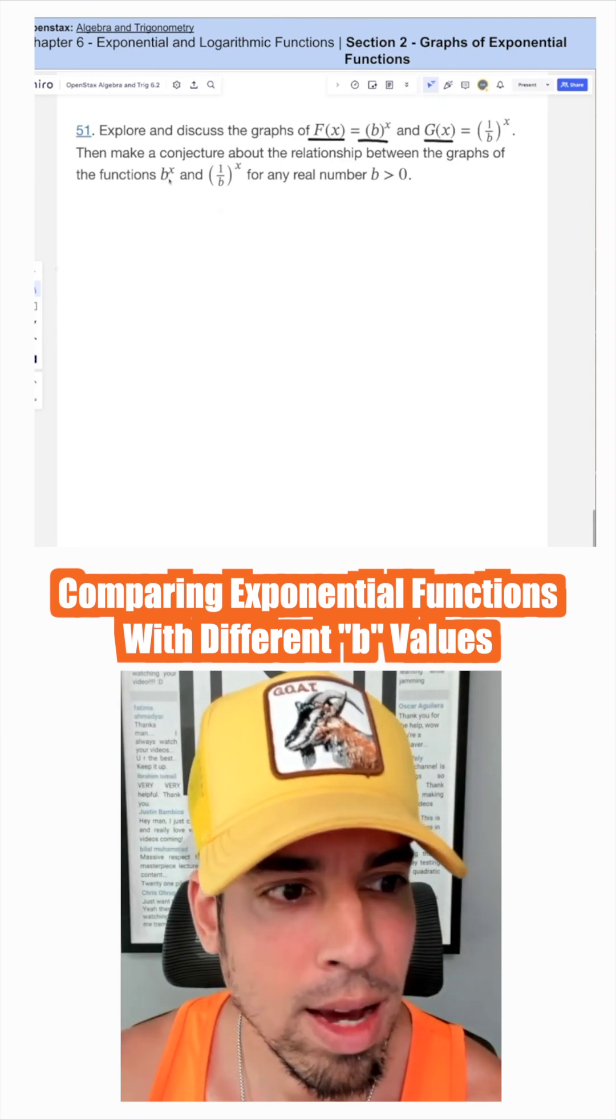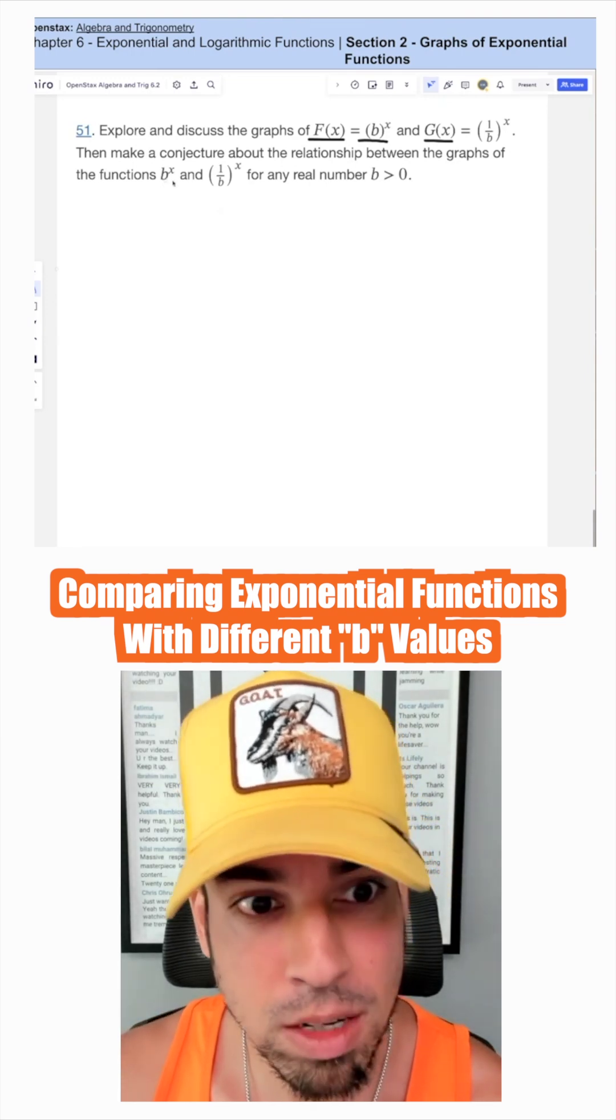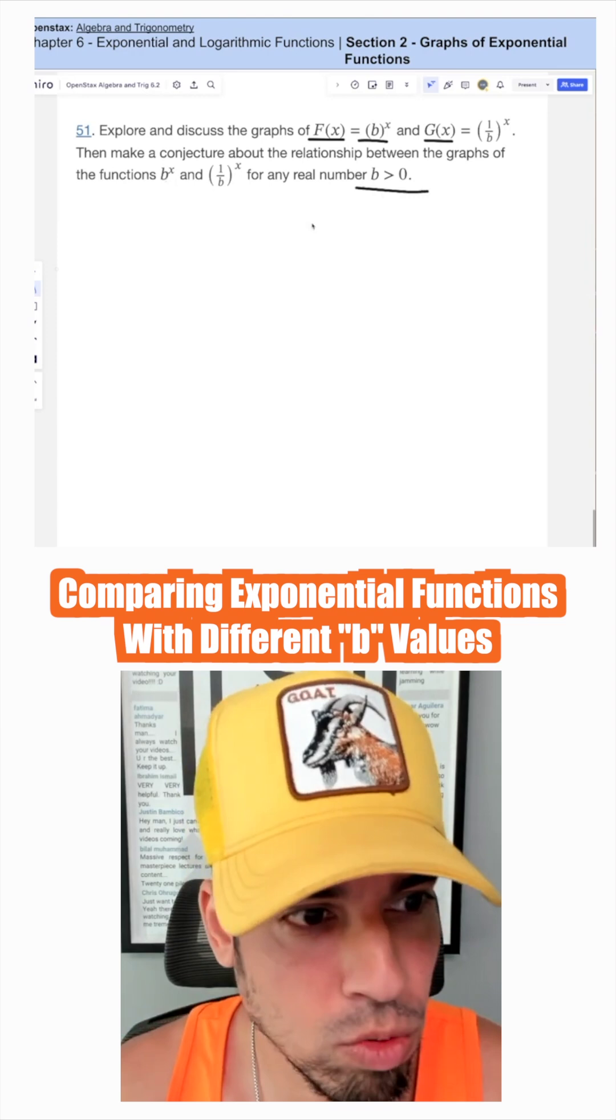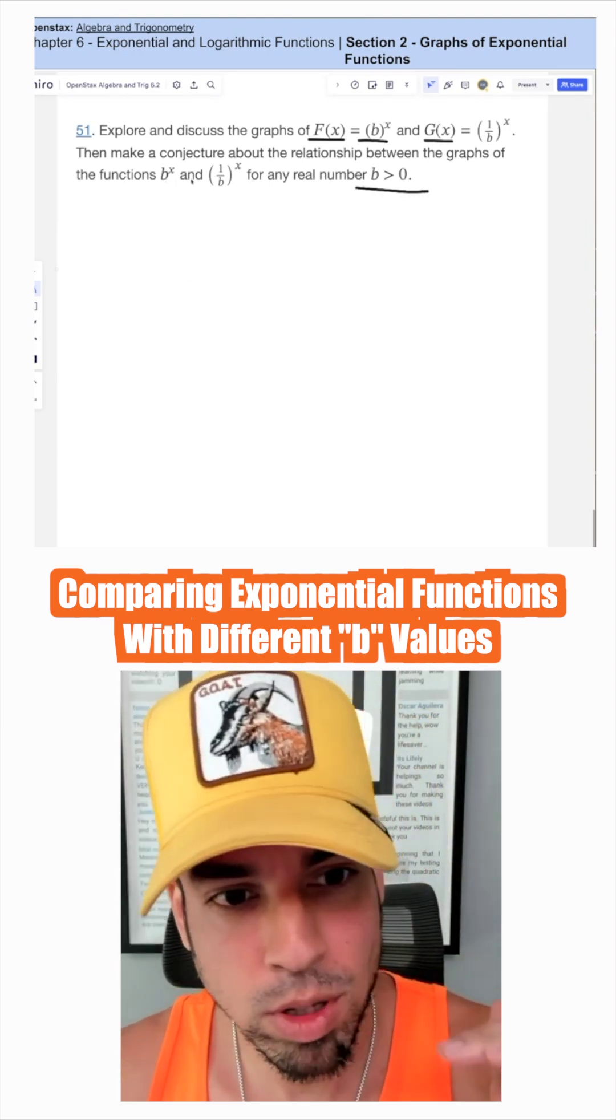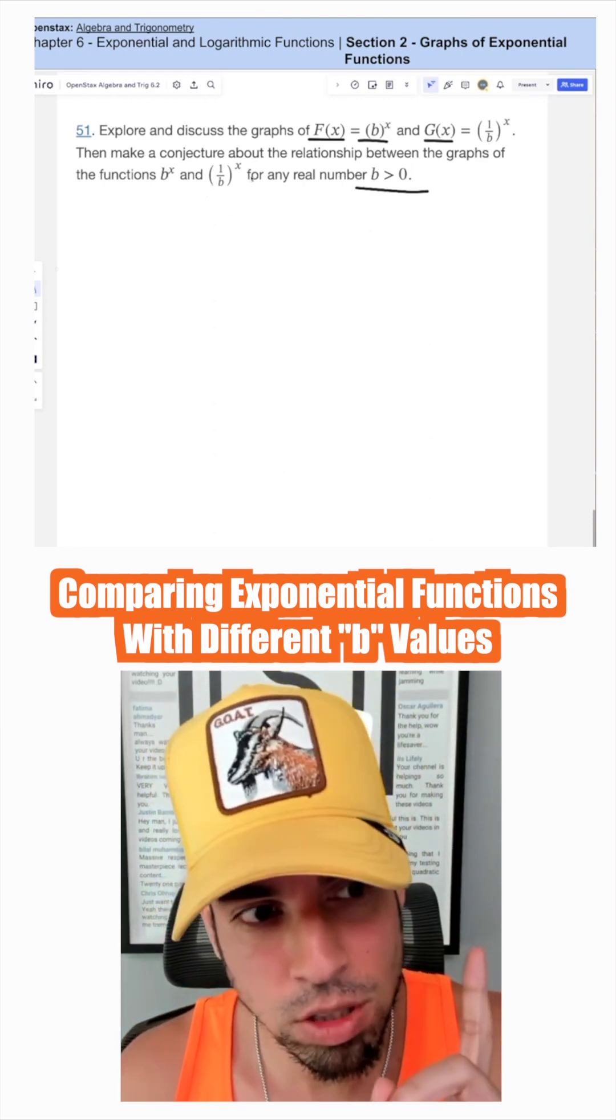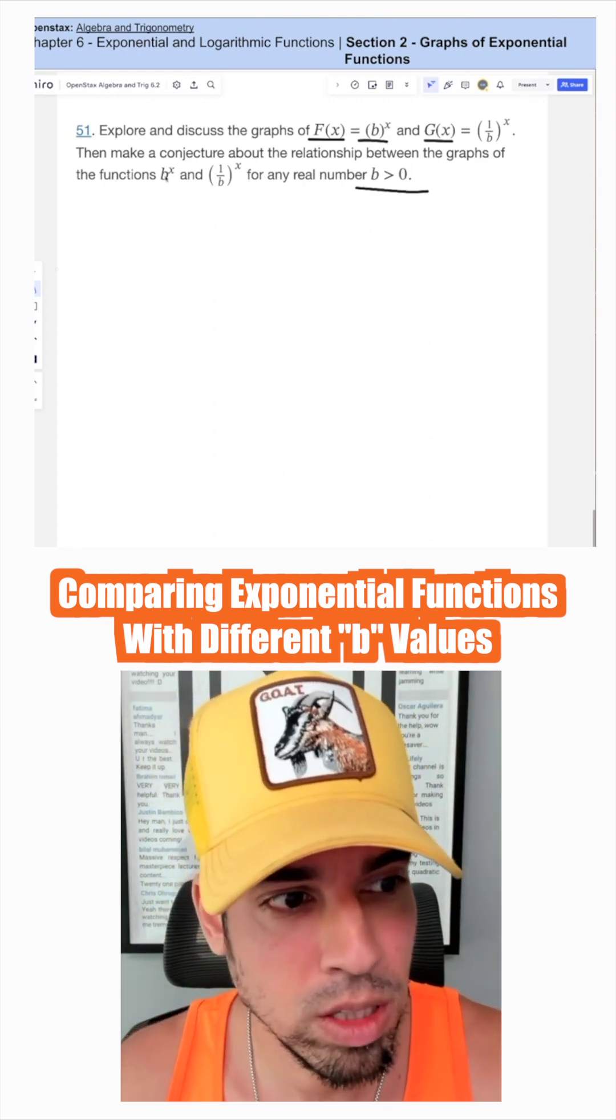So what's happening here is for b of x, we're assuming that b is greater than zero, but it depends in terms of what each of these will look like, whether b is greater than 1 or not. But let's just assume first, let's start with b being 2.